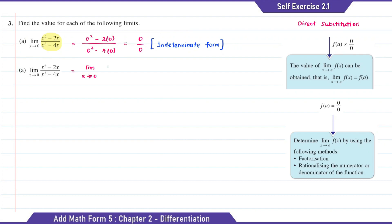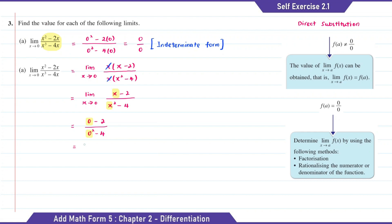For the numerator, the common factor is x, so x bracket (x minus 2). And for the denominator, the common factor is also x, so x bracket (x squared minus 4). So here we can cancel the x. When we substitute x with 0, the answer will be negative 2 over negative 4. Simplifying this, the answer is positive 1 over 2.